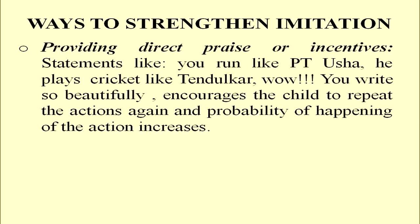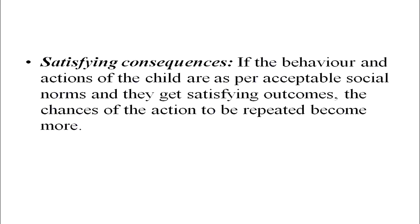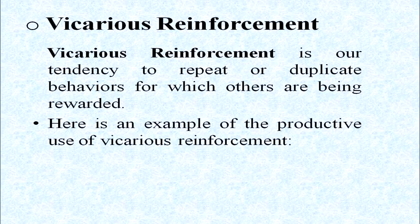How can a teacher strengthen imitation? The teacher should provide direct praise or incentive statements like, 'You can run like PT Usha,' or 'He plays cricket like Tendulkar,' or 'Wow, you write so beautifully.' This encourages the child to repeat the actions again and increases the probability of the action happening. Next is satisfying consequences — if the behavior and actions of the child are as per acceptable social norms and they get satisfying outcomes, the chances of the action being repeated become more. If a child gets appreciation from his parents by rhyming a poem, he will do it again and again to get those satisfying consequences.